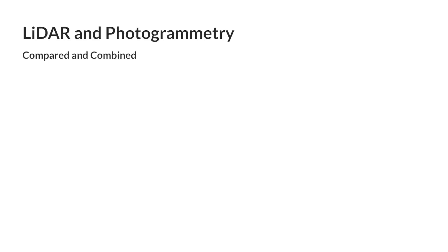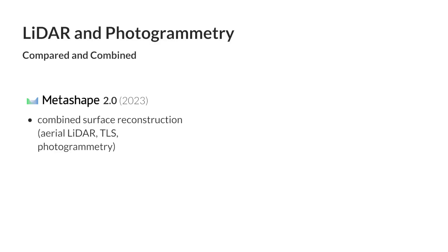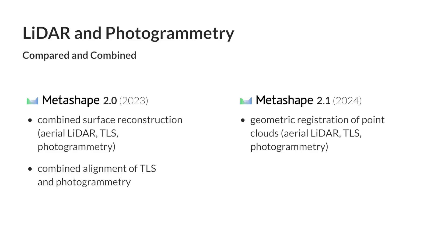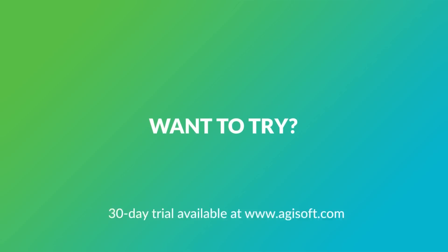A tool to perform this combined processing is Metashape 2.0, where we have implemented a combined surface reconstruction approach to simultaneously process imagery data with data from aerial LiDAR and terrestrial laser scanners. Additionally, in Metashape 2.0 we have developed the function of combined alignment of imagery data and terrestrial laser scans. Finally, in a future version, Metashape 2.1, we plan to introduce a function of geometric registration of point clouds from various sources. Thank you for your attention.